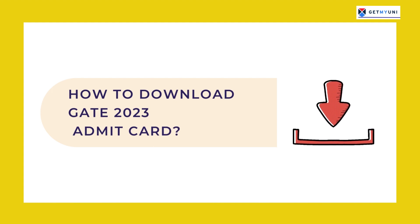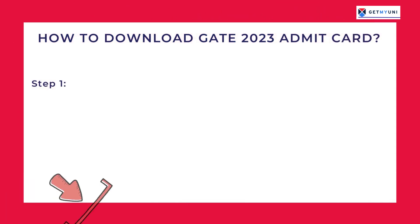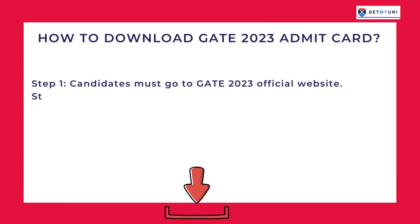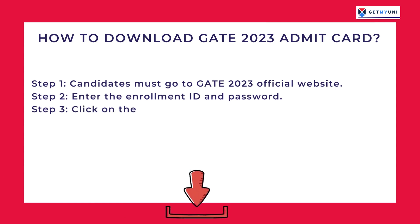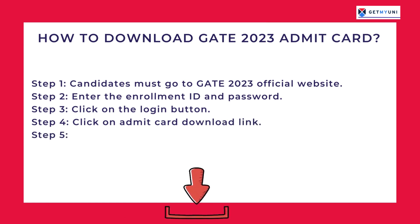Each applicant should follow these instructions to download their GATE 2023 ADMIT CARD. Step 1: Candidates must go to the GATE 2023 official website. Step 2: Enter the enrollment ID and password. Step 3: Click on the login button. Step 4: Click on the ADMIT CARD download link.